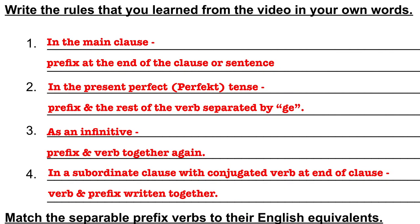So there are four rules for how to use these separable prefix verbs. If it's in the main clause, the prefix goes at the end of the clause or sentence. If it's used in the present perfect tense, use the past participle which has the prefix, then GE, then the rest of the verb. If it's used as an infinitive, it goes back together as one verb. And if it's in a subordinate clause and conjugated at the end of the sentence, the prefix and verb are back together.